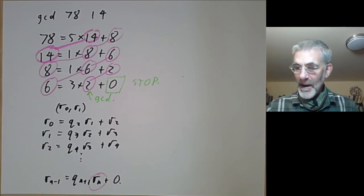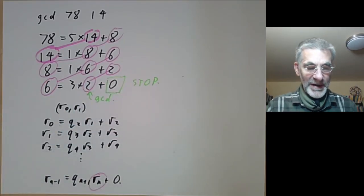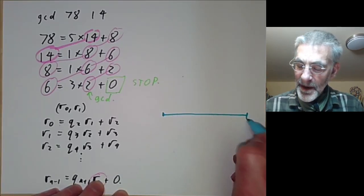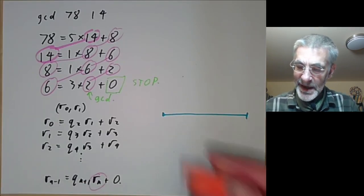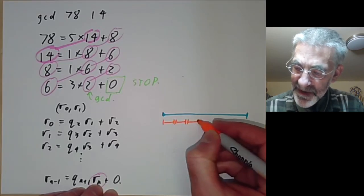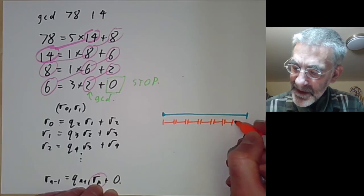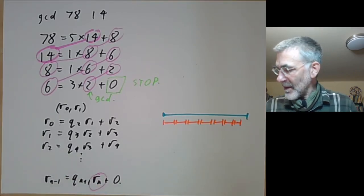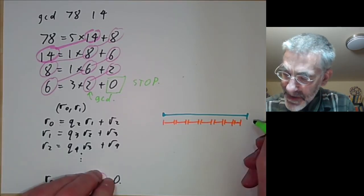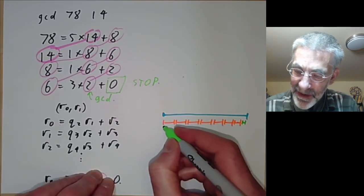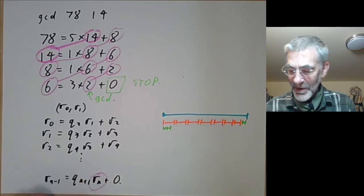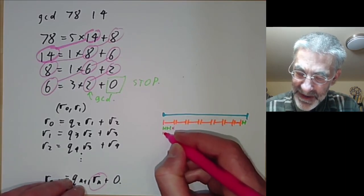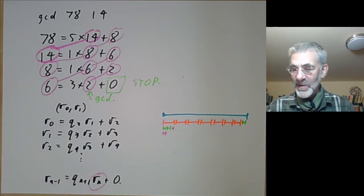Euclid himself wouldn't have done it that way because he didn't have our algebraic notation. Instead, Euclid's version looks like this: you take one line segment and subtract various copies of a second, shorter line segment, leaving a small green remainder. Then you subtract copies of the green segment from the orange segment, getting a pink segment. If the pink segment exactly fills two copies of the green segment, then the pink segment is the greatest common divisor.